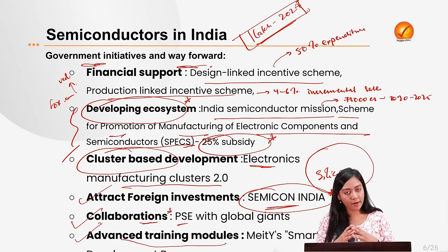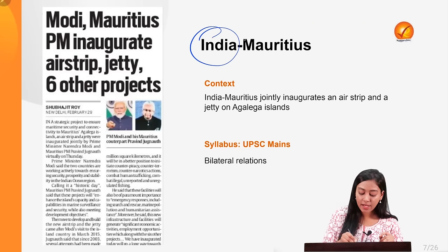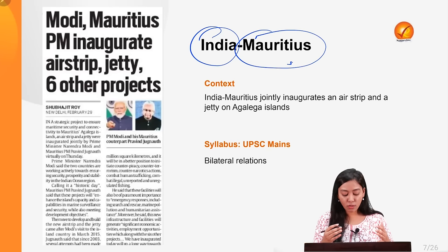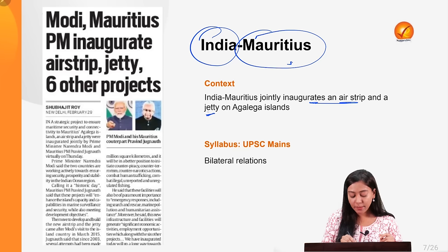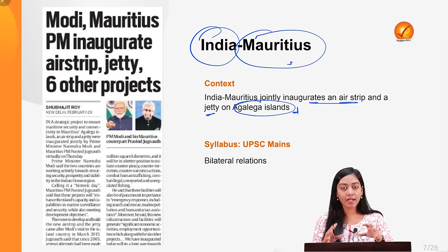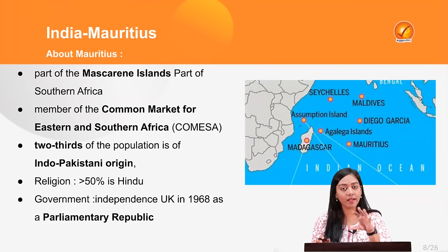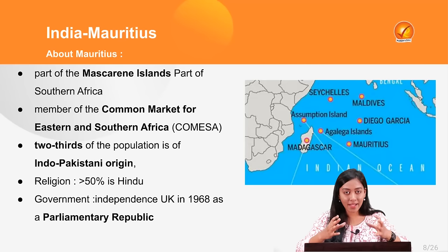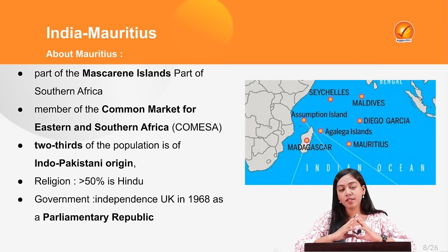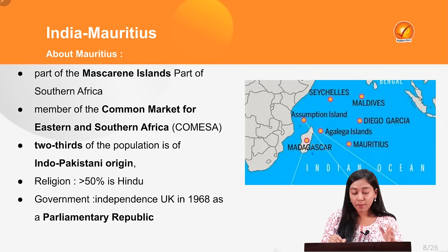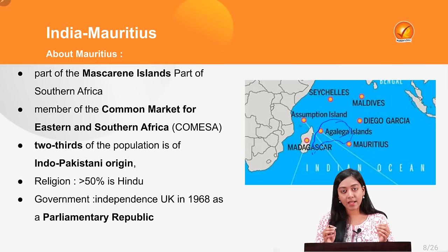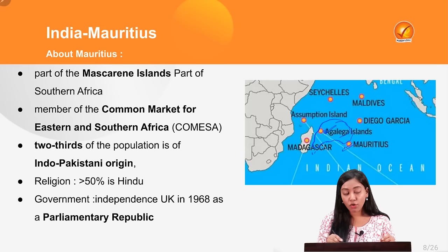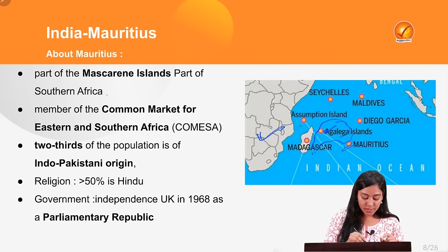Now we will discuss bilateral relations between India and Mauritius, in the context of the recently inaugurated airstrip and jetty by both countries on Agalega Island. Geographically, both Mauritius and Agalega Island are part of the broader Mascarene Islands — a group of volcanic islands located to the east of Madagascar, which includes Reunion Island, Mauritius, and Agalega Island. All of them belong to the African continent.